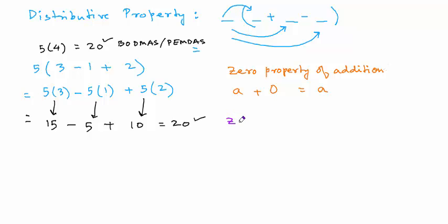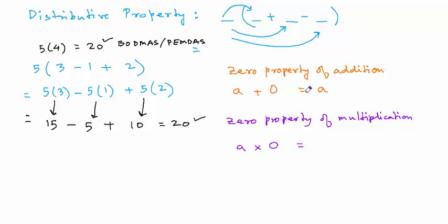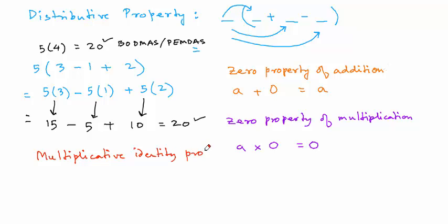There's something similar with multiplication — it's called the zero property of multiplication. It tells us that when we multiply a number by zero, the answer is always zero, unlike addition. We also have something called the multiplicative identity property. Despite its complex name, it simply tells us that when a number is multiplied by one, the result is the number itself. Anything times one is the number itself.